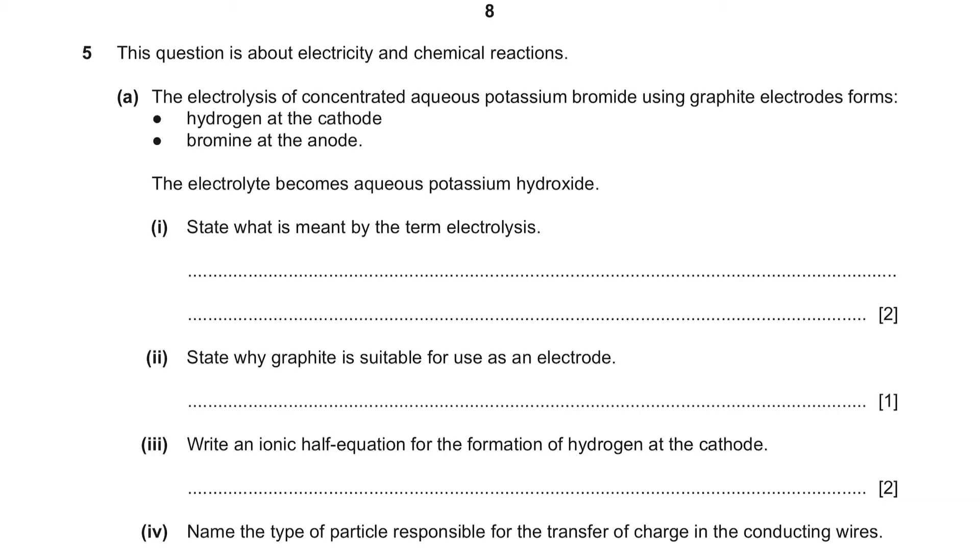Question 5. This question is about electricity and chemical reactions. The electrolysis of concentrated aqueous potassium bromide using graphite electrodes forms hydrogen at the cathode and bromine at the anode. The electrolyte becomes aqueous potassium hydroxide.